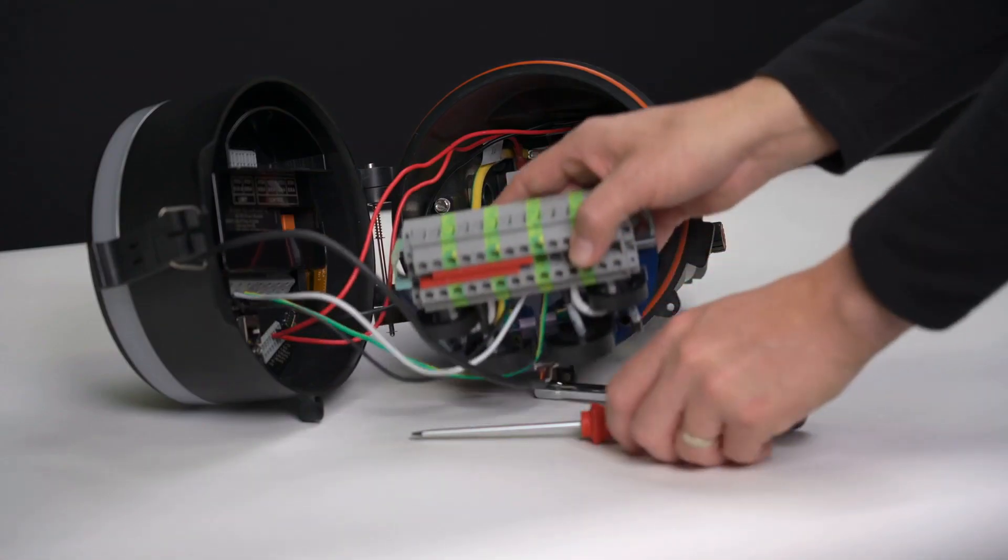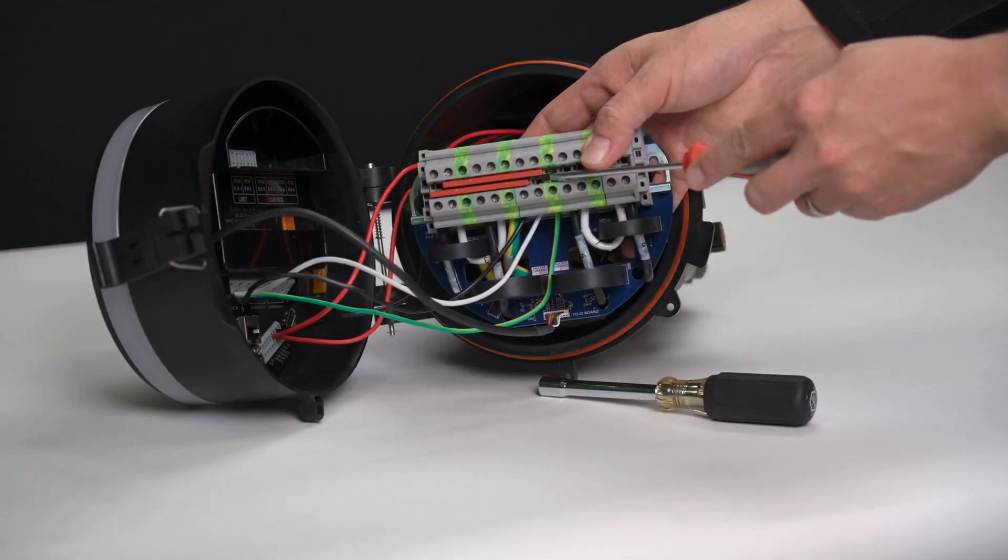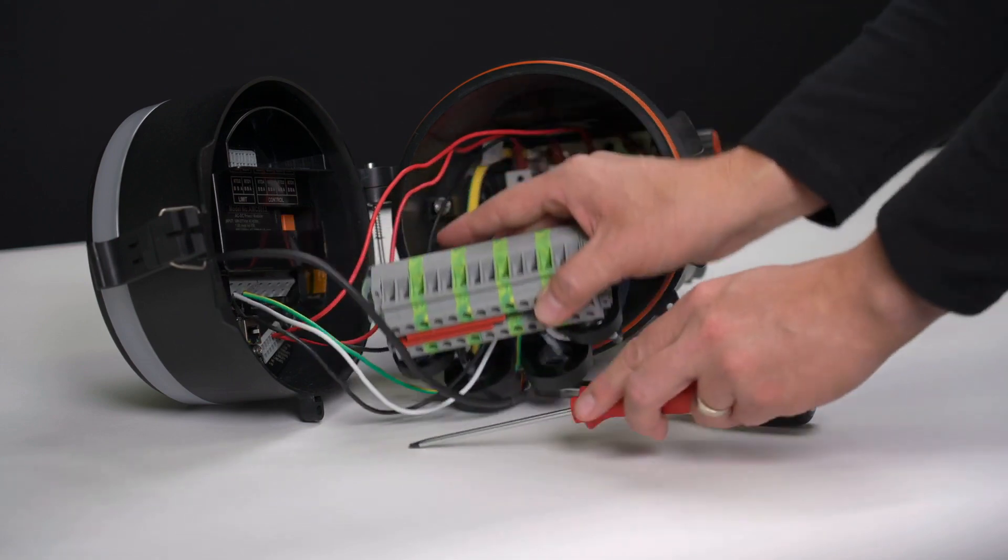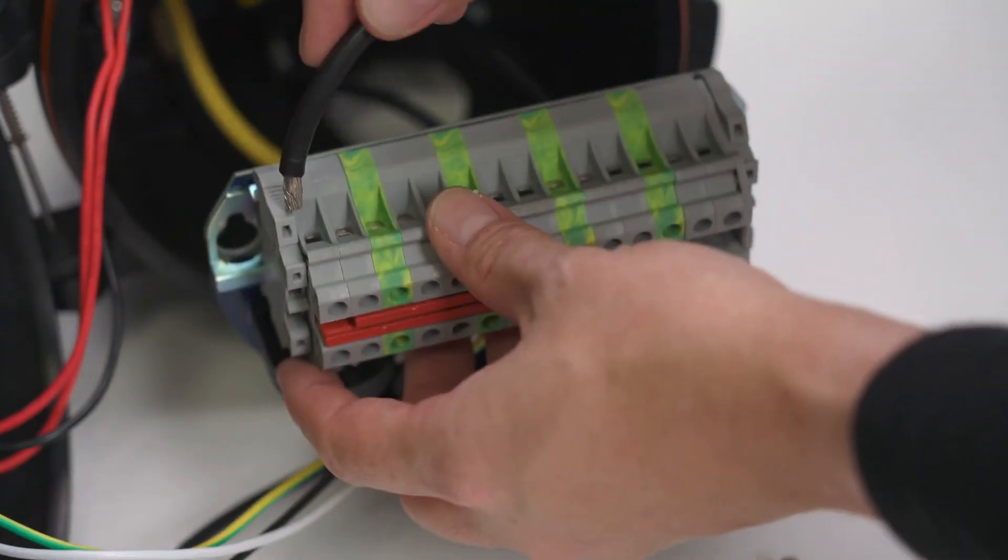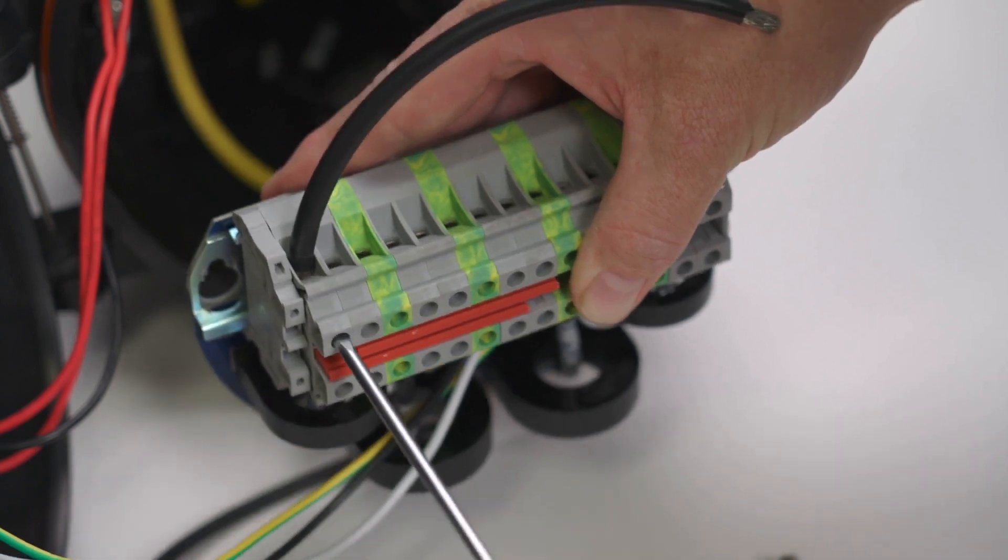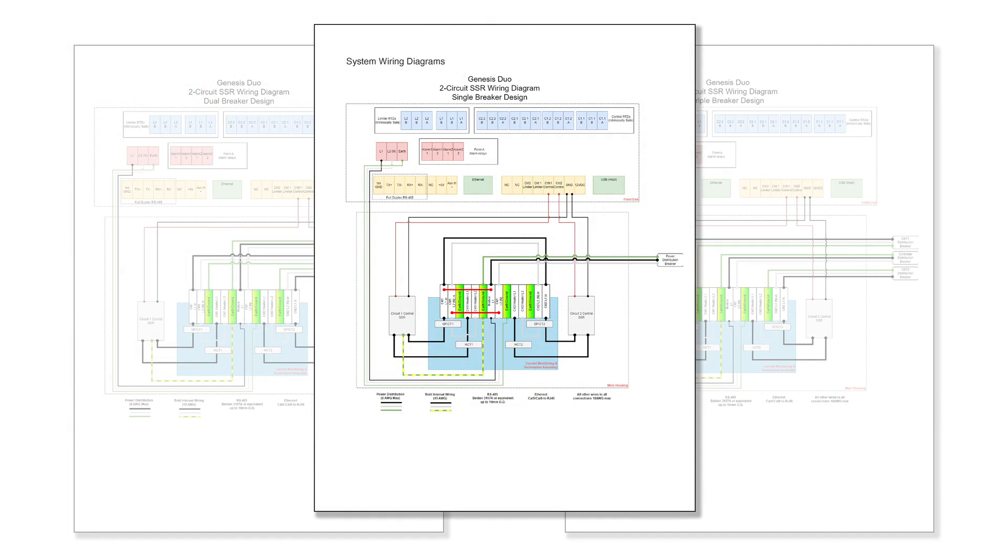After glands are installed, the jumper configuration of the main terminal blocks must be selected. The reason for this is to combine or isolate circuits to individual breakers. Refer to the jumper configurations in the wiring diagram.